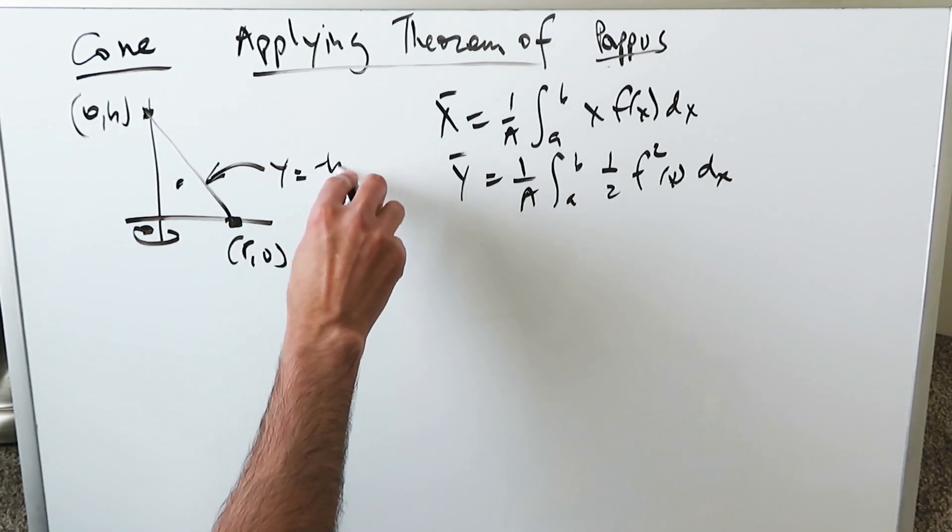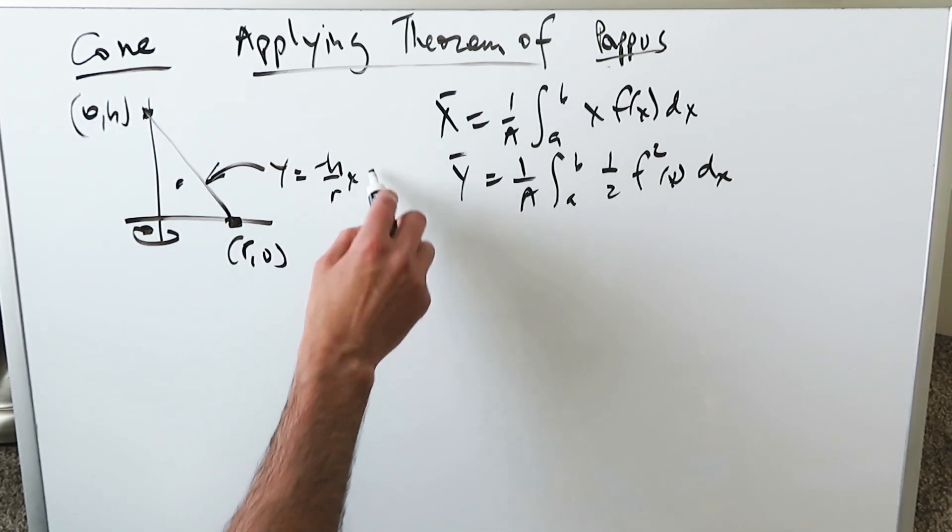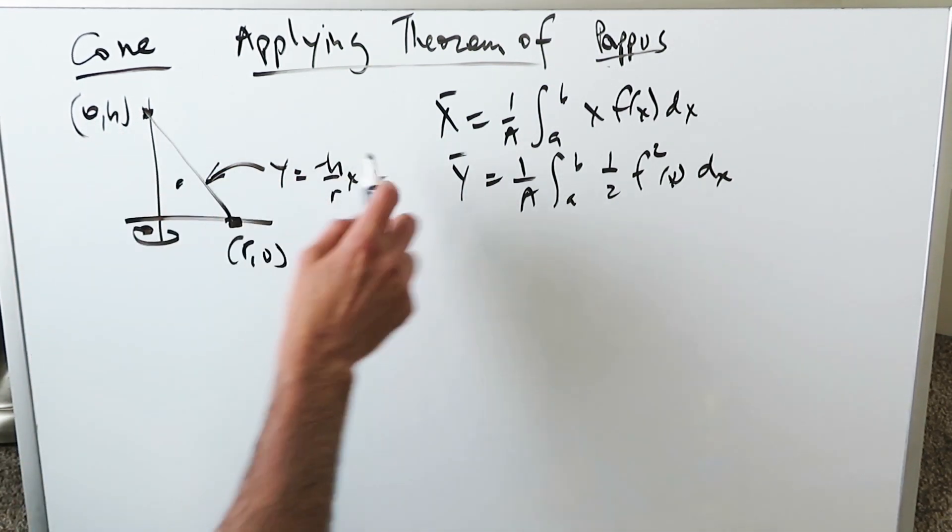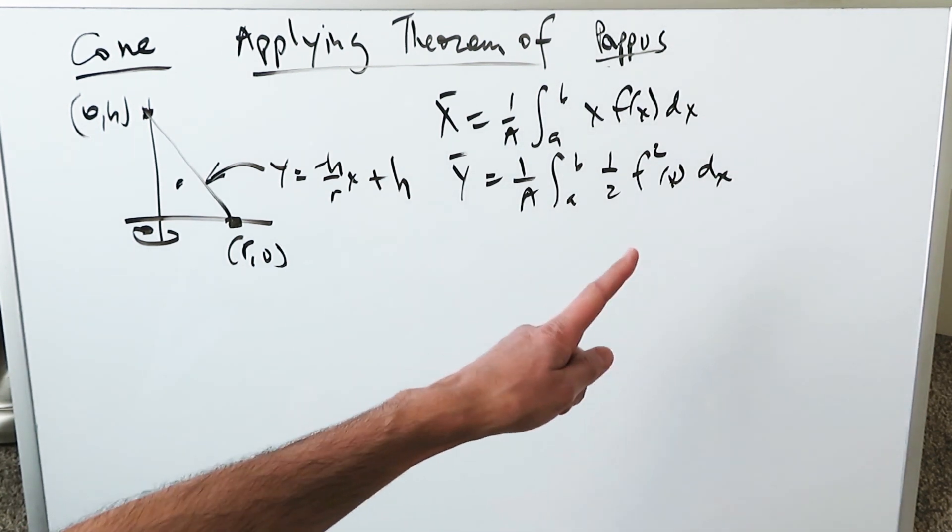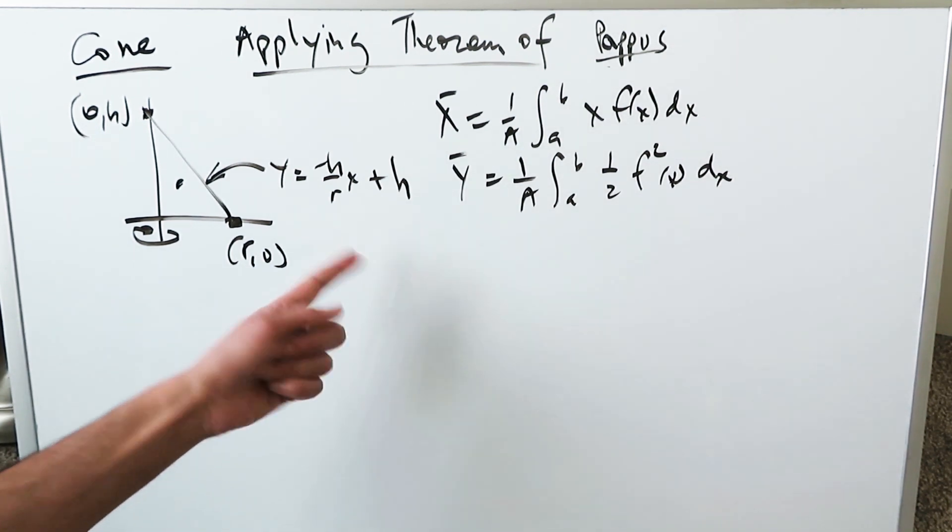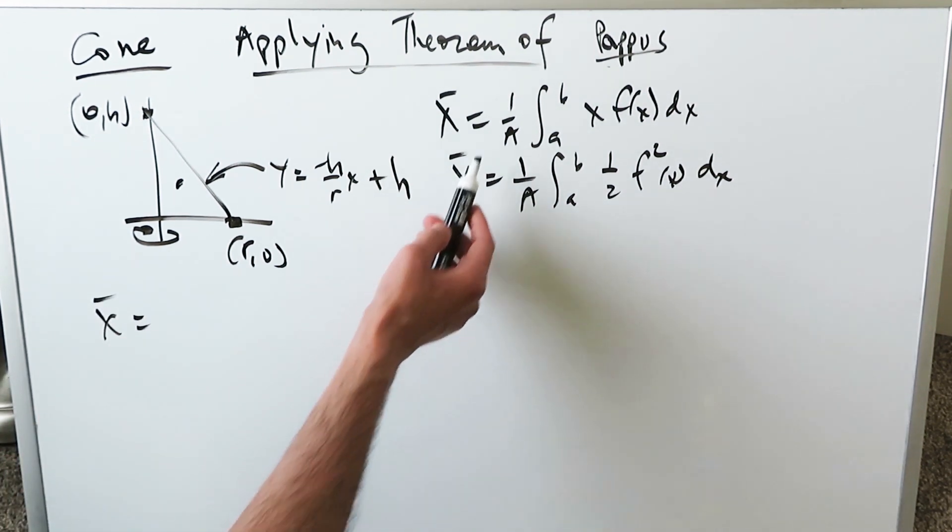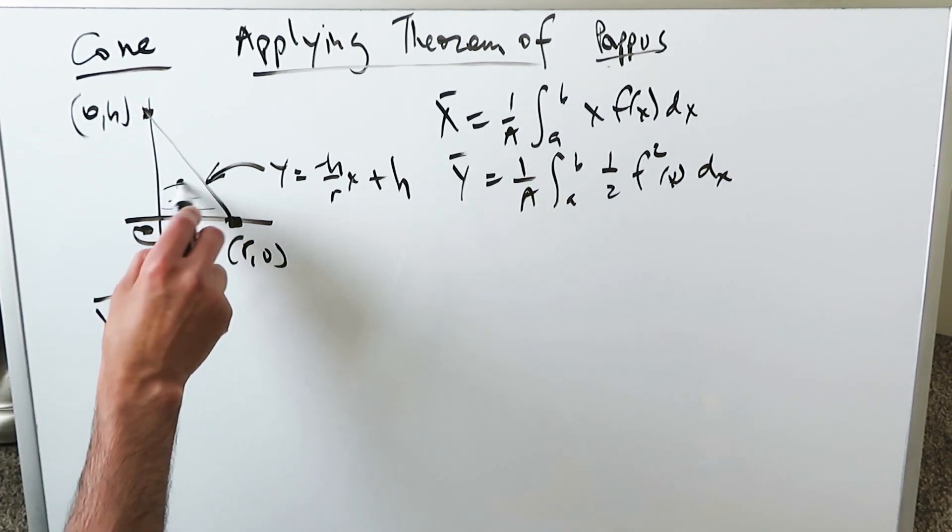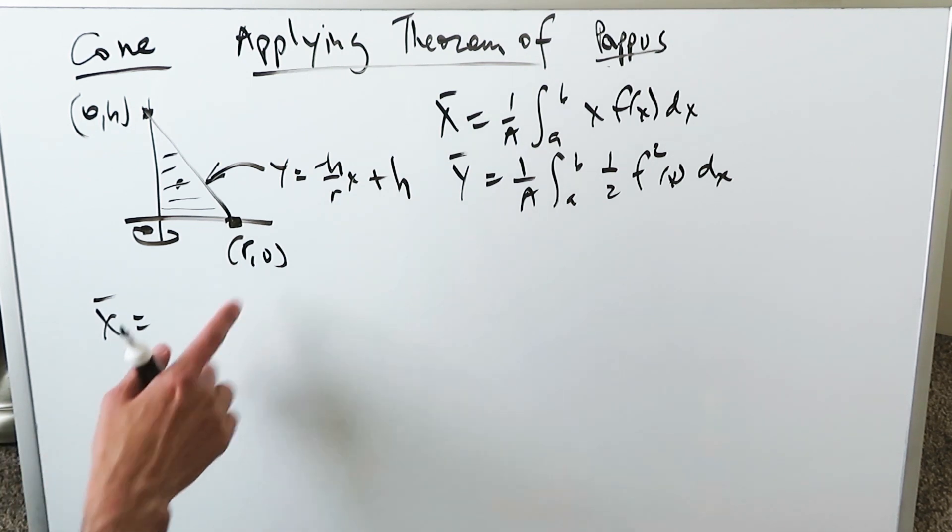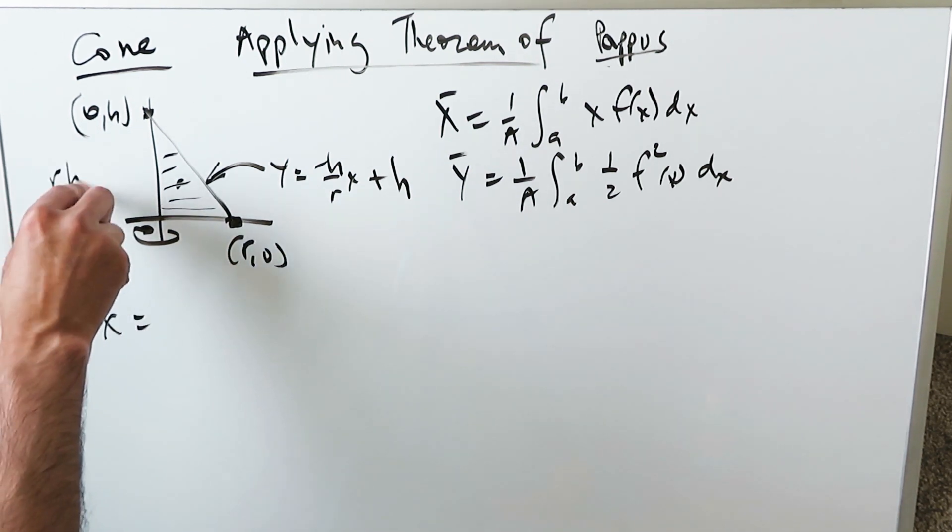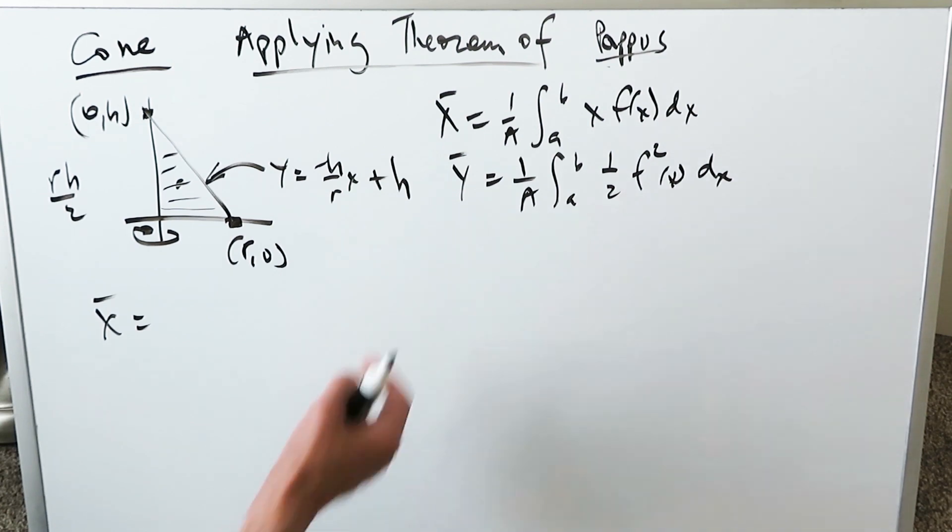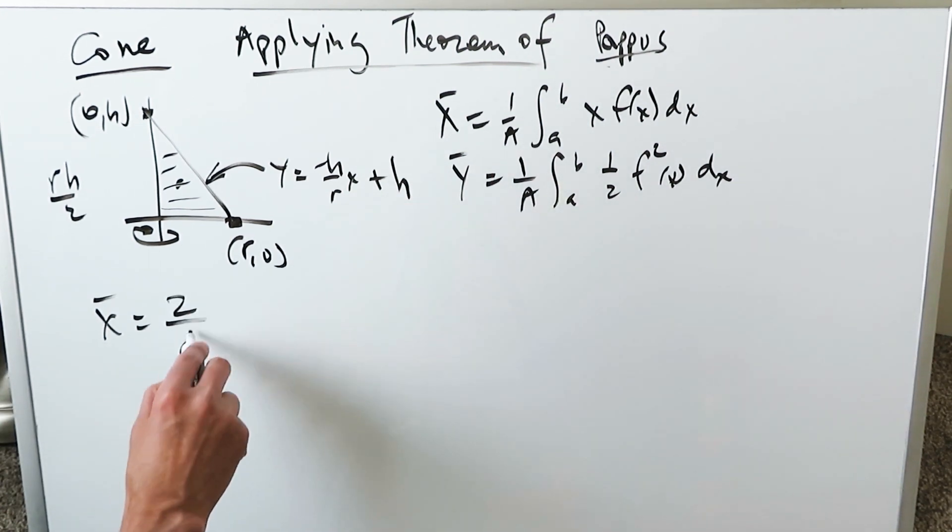You can see it: y is equal to minus h over r times x plus, right here, your y-intercept. Since everything with those centroid equations are dx, you can maintain this equation. The x value, what will it be? We have an area. What's the area for a triangle? Half base times height, but here base is r. You can say rh over 2. That's what we have. The reciprocal of that would be 2 over rh.